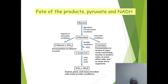Under aerobic conditions, pyruvate produces CO2 and acetyl-CoA, and this acetyl-CoA enters the citric acid cycle to produce carbon dioxide, water, and energy. Animals, plants, and many microbial cells under aerobic conditions use this pathway.